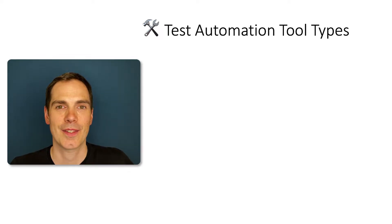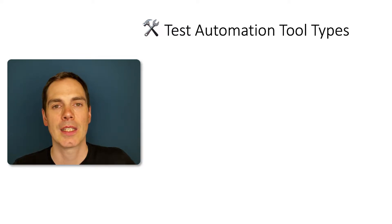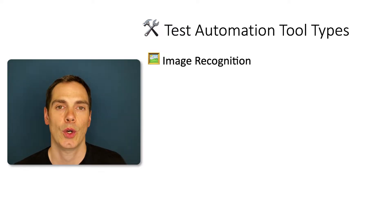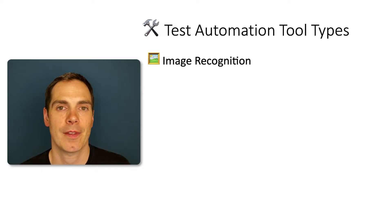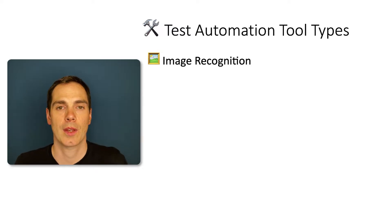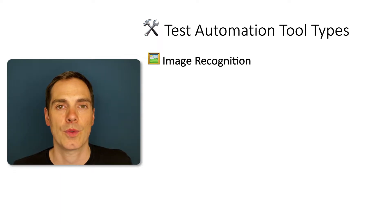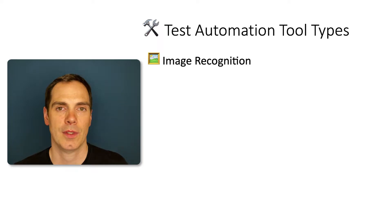The first topic is test automation tool types, because it's really important to know how these tools work these days. There are different approaches that can impact your testing, your tech stack, and your test environment. First, there are tools that use image recognition to identify elements on the screen — tools like Sikuli, for example. You can take a small screenshot of a button in your app, and the image recognition tool uses those screenshots to identify elements and execute the test case.